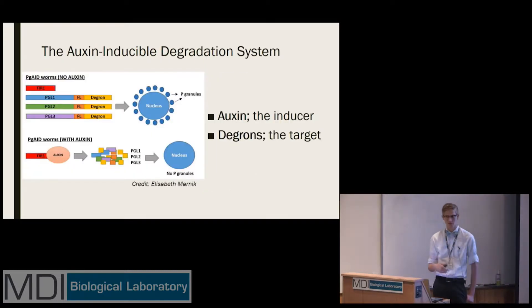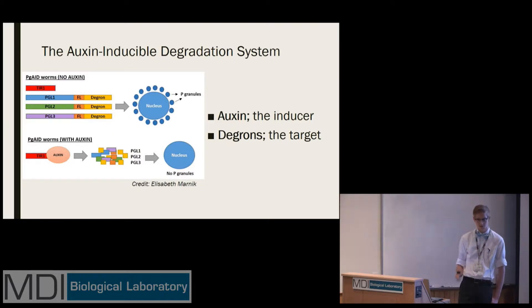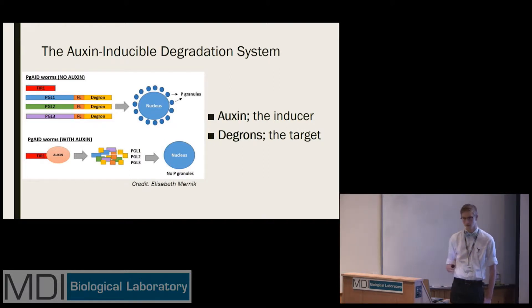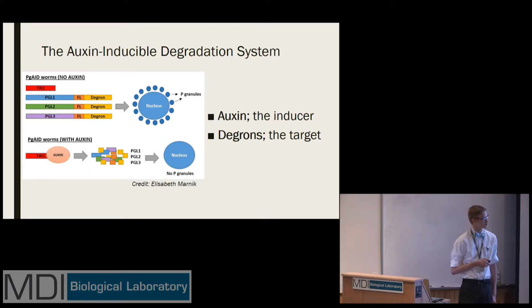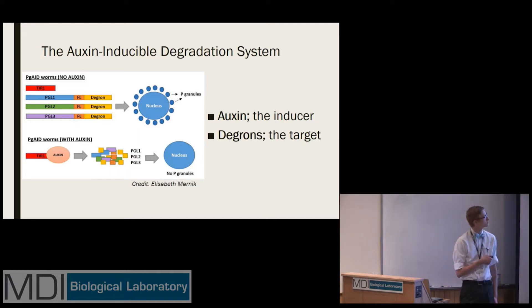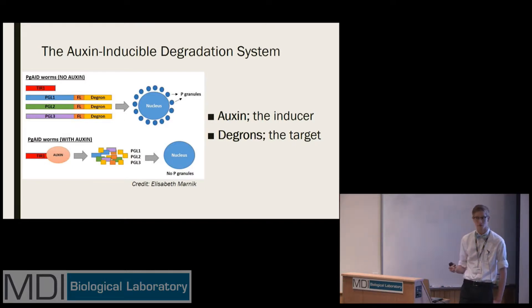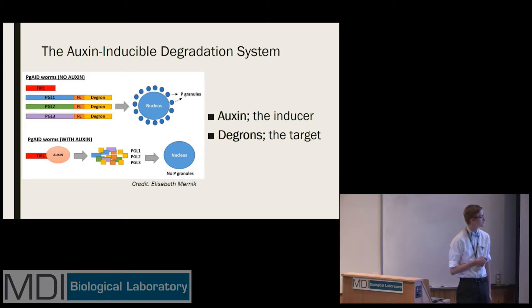That's my project — using the AID system to degrade proteins specifically and conditionally. This technique has been shown to be used in C. elegans already, but this is the first time we're targeting P granule components. It consists of two main aspects: degrons, which are short amino acid sequence tags that we engineer onto our target proteins using CRISPR, and auxin, which is actually a plant hormone that serves as an inducer molecule. In the presence of auxin, the system is turned on and your target proteins are degraded.